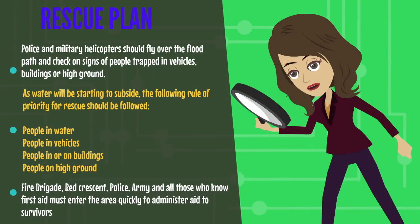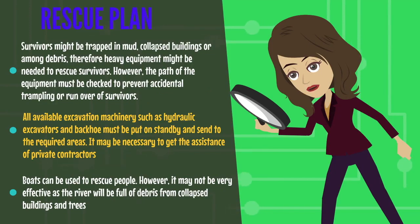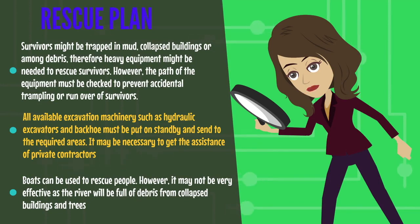A rescue plan should be prepared beforehand. When there is an incident of dam failure, police and military helicopters should fly over the flood path and check for people trapped in vehicles, buildings, or on high ground. As water begins to subside, the priority for rescue follows this order: people in water, people in vehicles, people in or on buildings, and lastly people on high ground. Fire brigade, Red Crescent, police, army, and all those who know first aid must enter the area quickly. Survivors might be trapped in mud, collapsed buildings, or among debris, so heavy equipment may be needed. The path of equipment must be checked to prevent accidentally running over survivors. All available excavation machinery must be on standby, and assistance from private contractors may be necessary. Boats can be used to rescue people, though they may not be very effective as the river will be full of debris from collapsed buildings and trees.